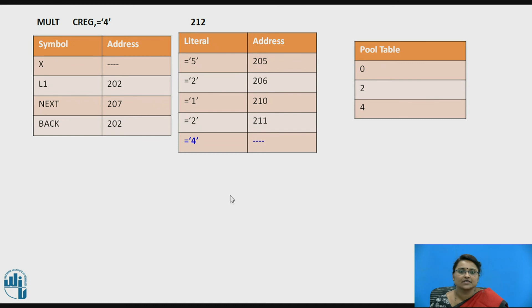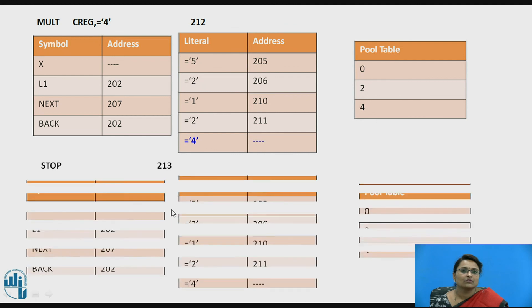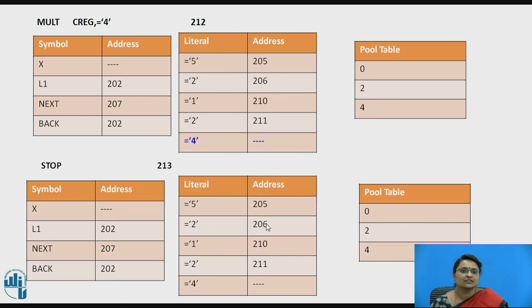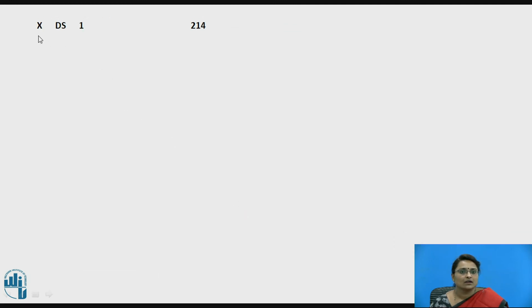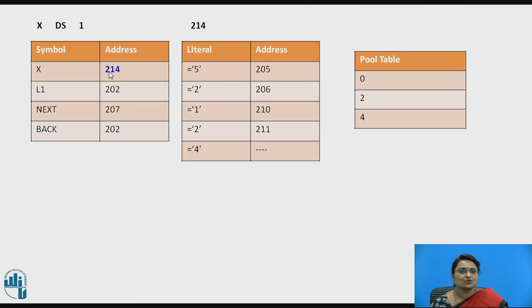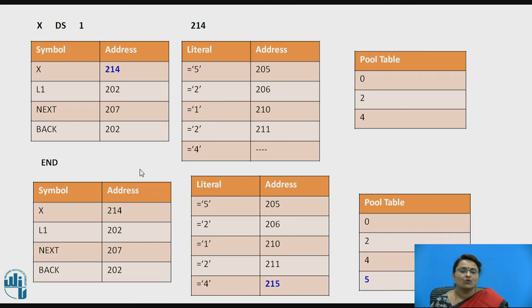The next statement has 4 as a literal, so a literal table entry is made. For STOP, no changes are made to the table. The declaration statement defines X as a variable identifier with 1 memory word allocated. The current location counter value is 214, so that is allocated for X.